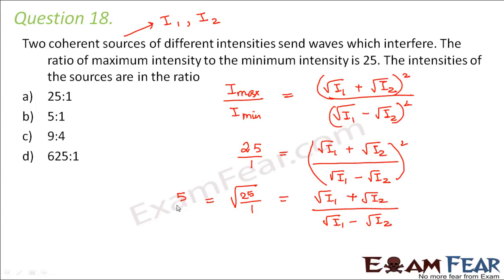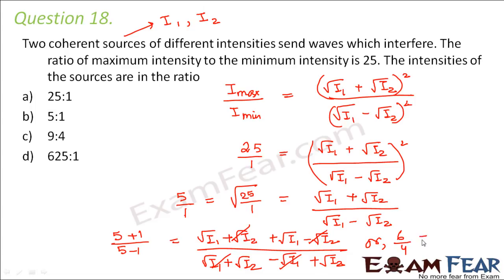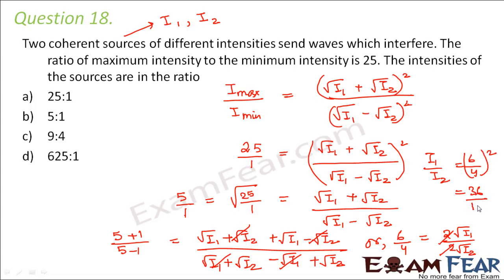Using componendo and dividendo: numerator plus denominator divided by numerator minus denominator gives 5 plus 1 divided by 5 minus 1, which equals 6 by 4. The two root i2 terms cancel, giving 2 root i1 divided by 2 root i2 equals 6 by 4. Therefore i1 by i2 equals (6 by 4) squared equals 36 by 16, which simplifies to 9 by 4. So the ratio is 9 is to 4.